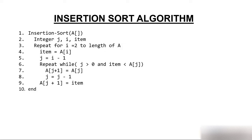Then 7 is selected and comes between 6 and 8. Next, 2 is selected and compared with 8, 7, 6, 5, 3; since it's greater than 1, it comes between 1 and 3. Then 4 is selected and compared with 8, 7, 6, 5; since 3 is smaller, 4 comes after 3. Now let's look at the insertion sort algorithm — there are ten steps.